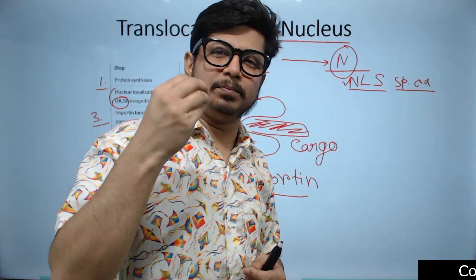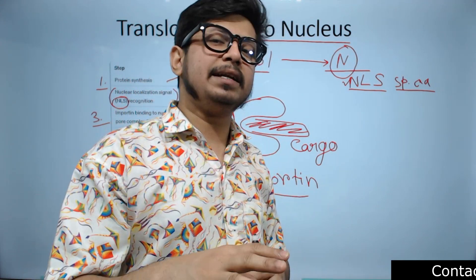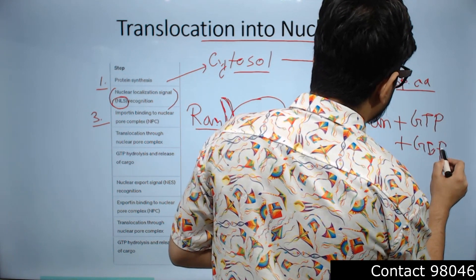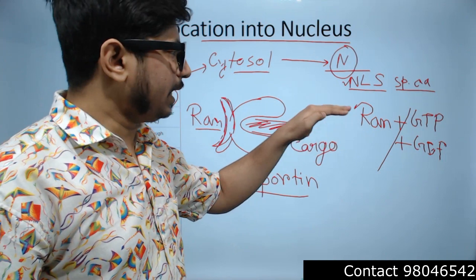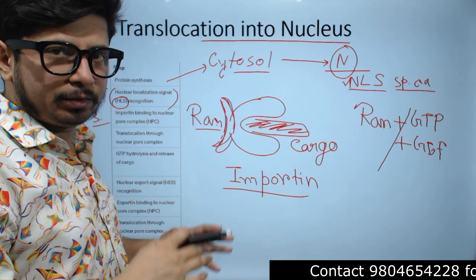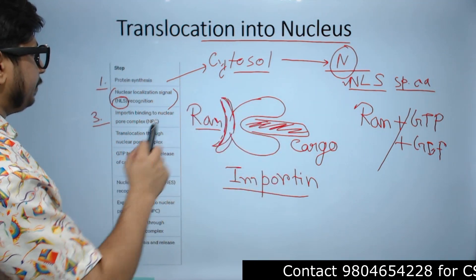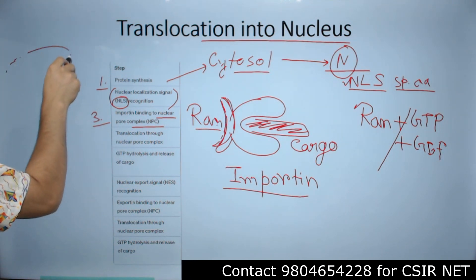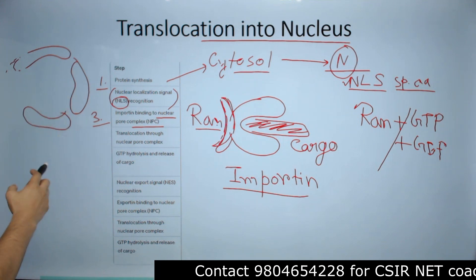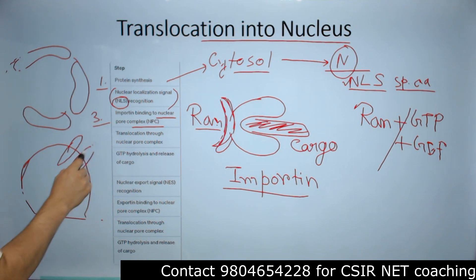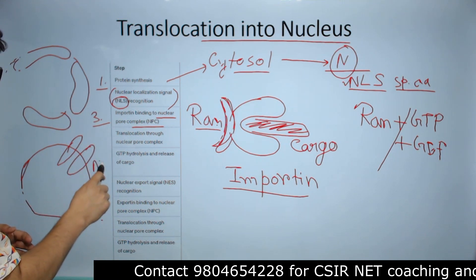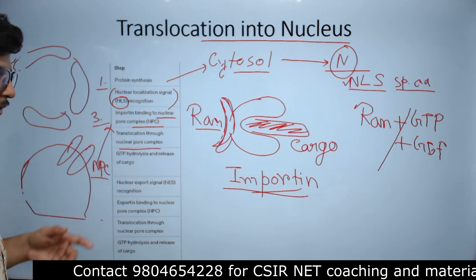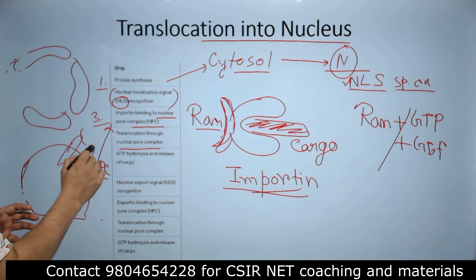RAN protein is one of the most important proteins for nuclear localization. RAN protein can have GTP associated with it — the active form — or GDP associated with it, the inactive form. We will talk more about RAN's role later. Once the importin has bound to the cargo, the importin binds to the nuclear pore complex. The nucleus has a nuclear membrane, and in that membrane there are channels or pores known as nuclear pore complexes. This nuclear pore complex interacts with the importin protein, and then translocation of the protein inside the nucleus begins.